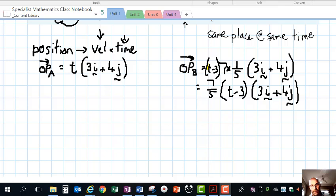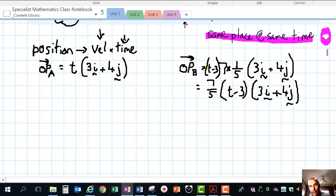They're going in the same direction—same place at the same time. If they start from the same point O and end at the same point P, they're going in the same direction because of the unit vector. We just have to find when the times equate, because if they're in the same place at the same time...